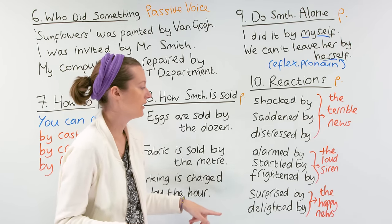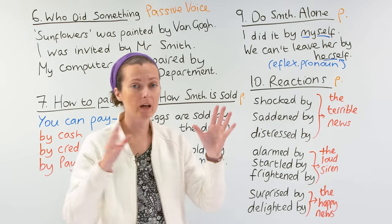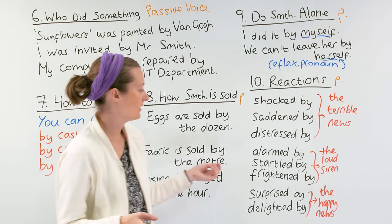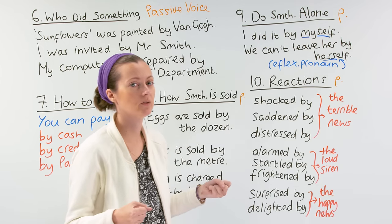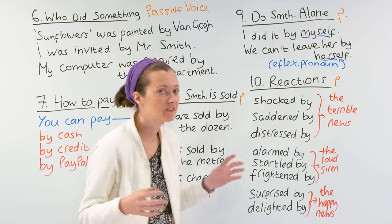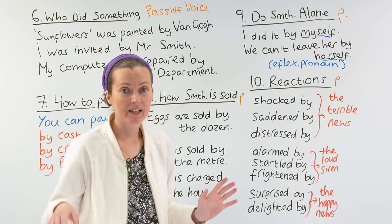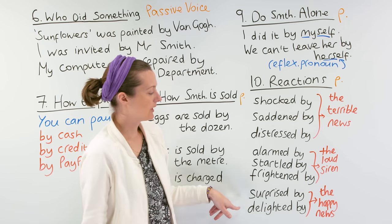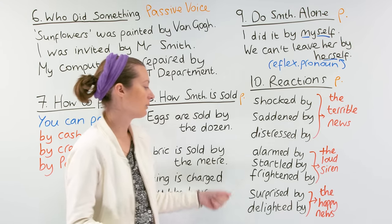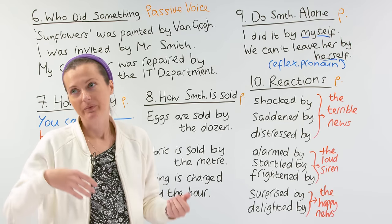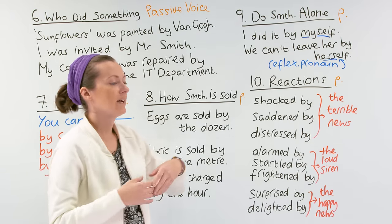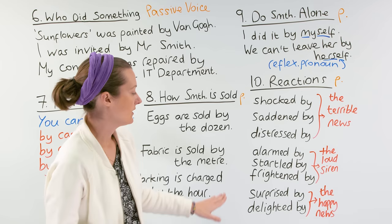Another example: 'We were alarmed by the loud siren.' When we're alarmed, we're surprised — it shocks us. We can also say 'startled by' — startled is like a moment when you jump. Or 'We were frightened by the loud siren.' There are also positive uses for strong feelings with 'by': 'I was surprised by everybody coming in with a big birthday cake for me.' Or 'I was delighted by my sister's news that she's having a baby.' So in these cases, we're happy.